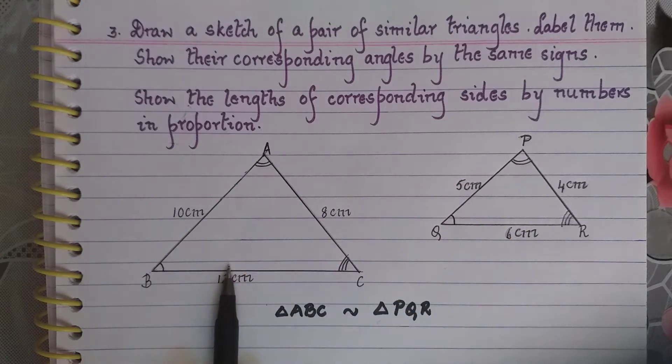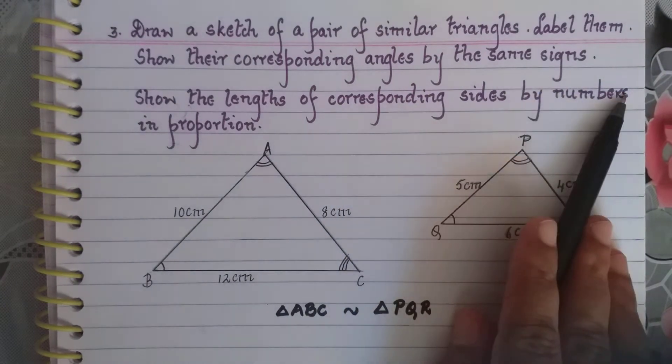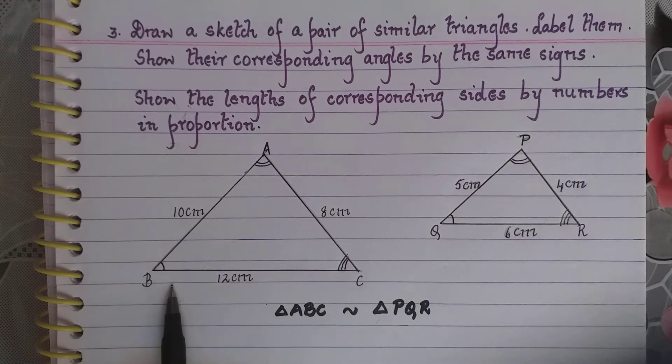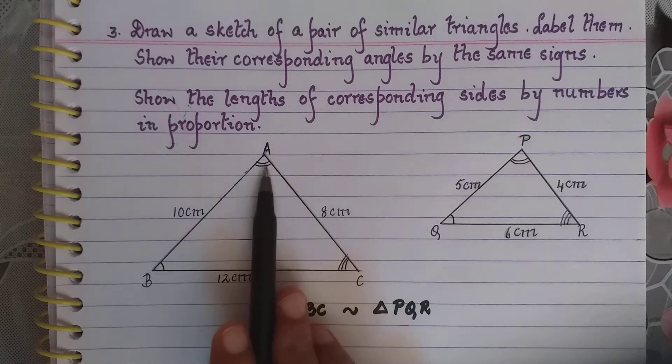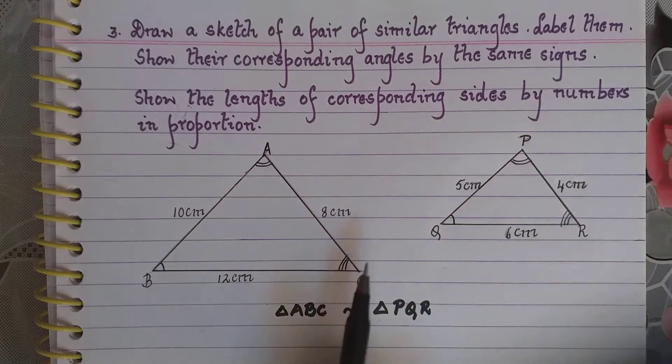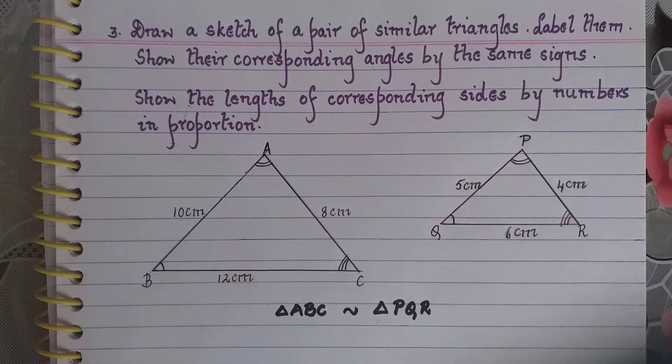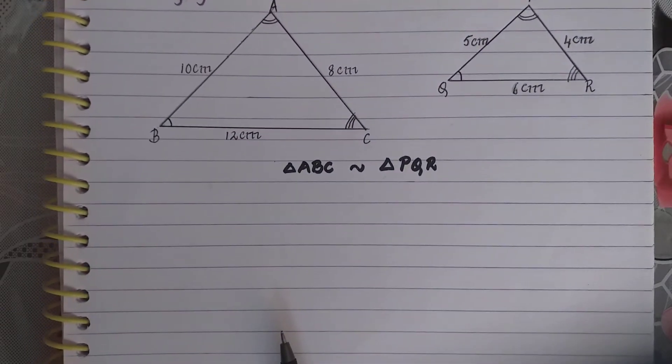Therefore these are corresponding. Now they have said show their corresponding angles by the same sign. So here I have one line, so here there is one line. Here there are two lines, so here also two lines. And here three lines, so here also three lines.